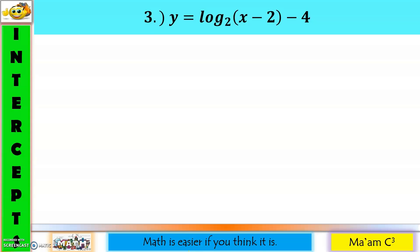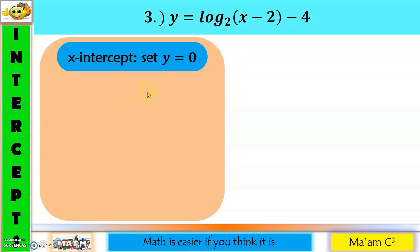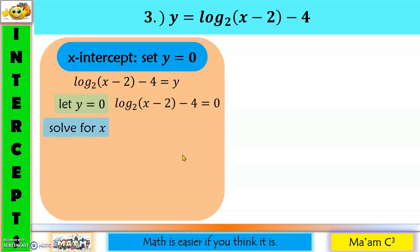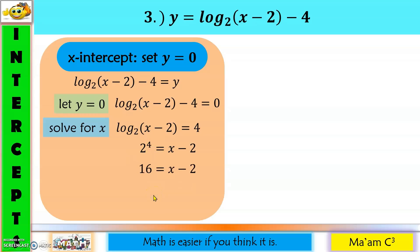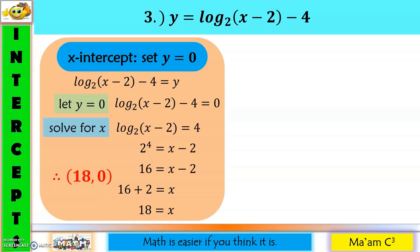Third example: y equals the logarithm of (x minus 2) to the base 2 minus 4. For the x-intercept, set y equal to zero, move negative 4 to the other side, then convert to exponential form: 2 raised to 4 equals x minus 2. Since 2 to the 4th is 16, we get 16 equals x minus 2, so x equals 18. The x-intercept is (18, 0), and the graph crosses the x-axis at that point. 18 is also the zero of the function.